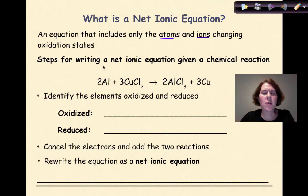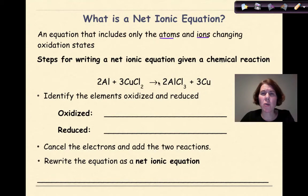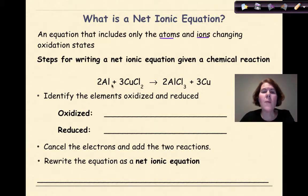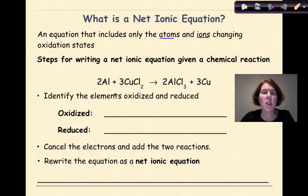We're going to look at some steps of how to write this type of reaction. Here's a chemical reaction: 2Al plus 3CuCl₂ yields 2AlCl₃ plus 3Cu. The first thing that we're going to do, as per usual, is assign oxidation numbers.